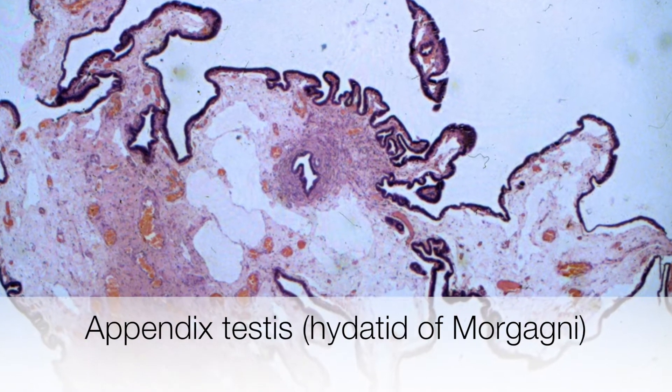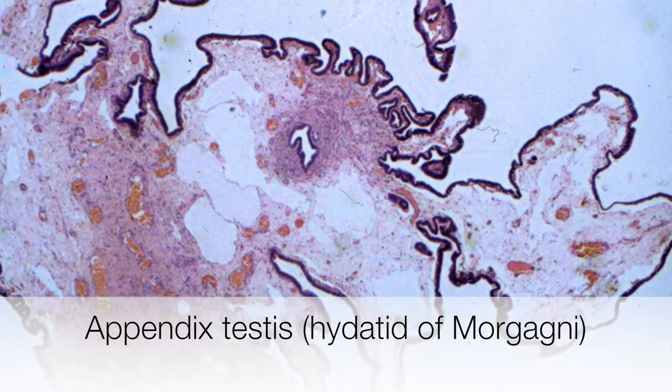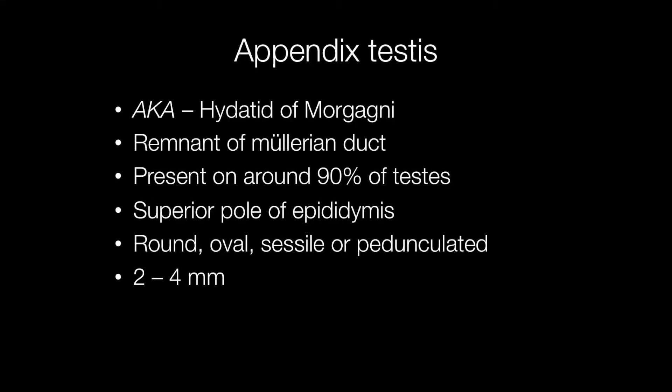This rather odd-looking structure is an appendix testis. An alternative term for appendix testis is hydatid of Morgagni. These are extremely common lesions and present on around 90% of testes at least. They are a remnant of the Müllerian duct and are situated at the superior pole of the epididymis.